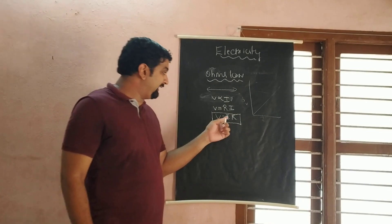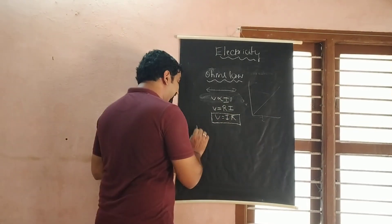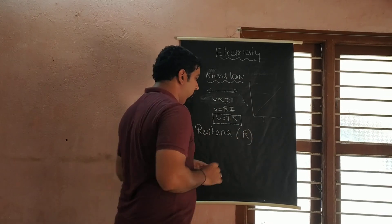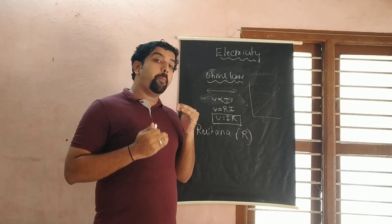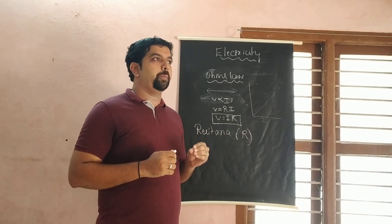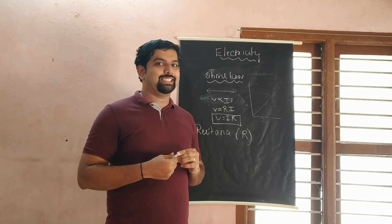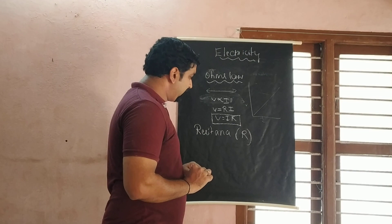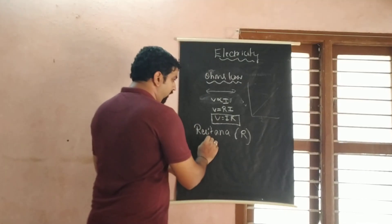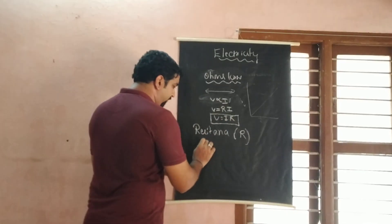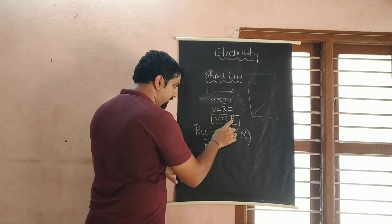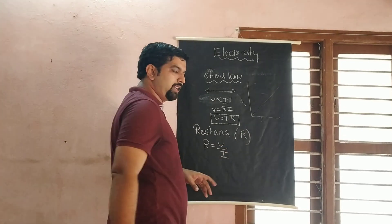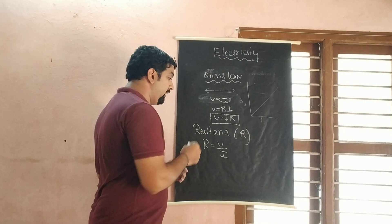Next we learn about R, which is resistance. The symbol for resistance is R. Resistance is the obstruction to the flow of charges through a conductor. From the Ohm's law formula V = IR, we can rearrange to get R = V / I, which is the formula for resistance.